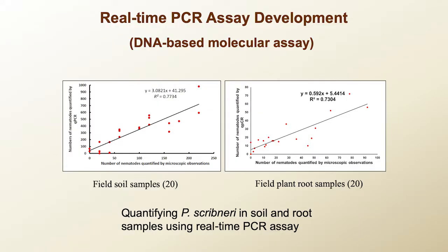With funding support from the North Dakota Specialty Crop Block Grant Program, we developed a new real-time PCR assay for detecting and quantifying this nematode directly from field soil after DNA extraction, and also for direct detection and quantification from plant roots. In this way, we can avoid the time-consuming steps of nematode extraction, identification, and counting, and improve detection efficiency.